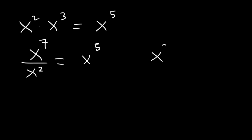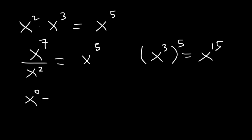Now what about x cubed raised to the fifth power? When you raise one exponent to another power you need to multiply. 3 times 5 is 15, and so that's known as the power rule. And anything raised to the zero power is 1.